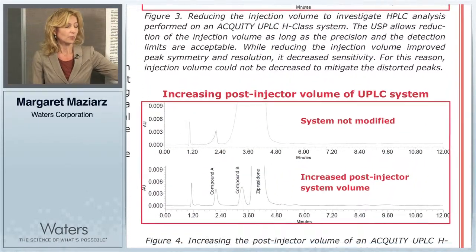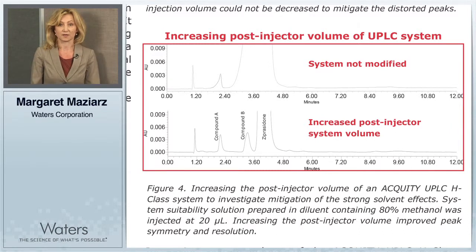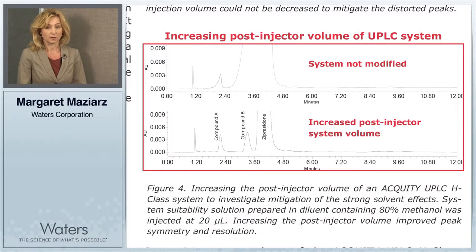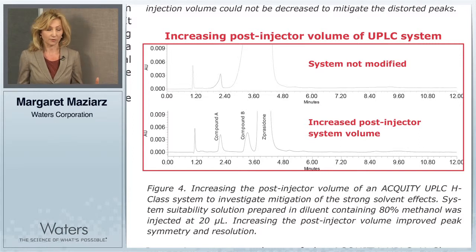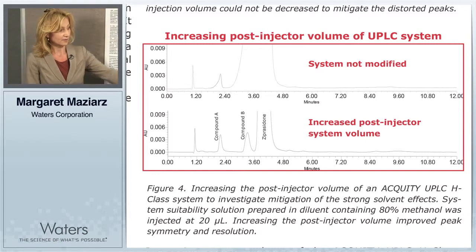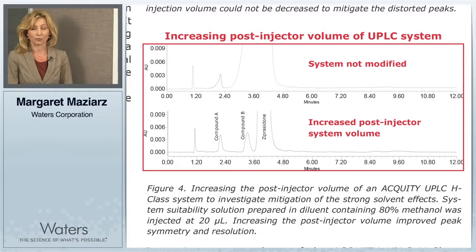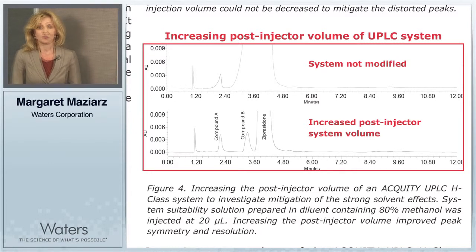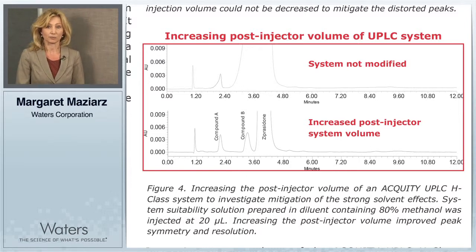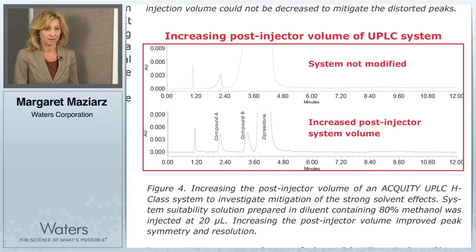In figure four, we increased the post-injector volume of the UPLC H-Class system, meaning we installed extra tubing between the injector and the column inlet to increase the system volume. That drastically and significantly improved the separation, peak symmetry, and resolution, and we remained within the allowable recommendations by the USP. By increasing the system volume, we were able to successfully reproduce the HPLC methods on the Acquity UPLC H-Class system.